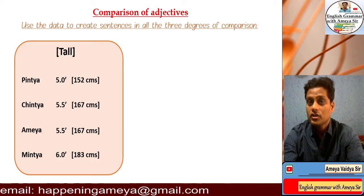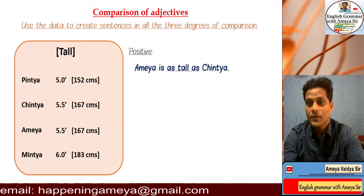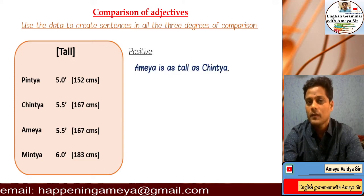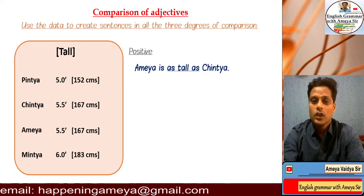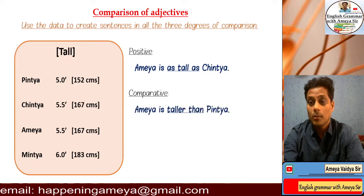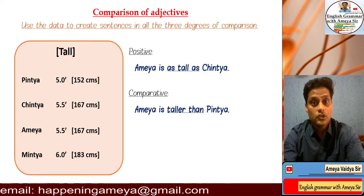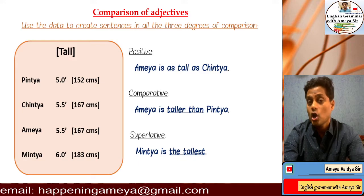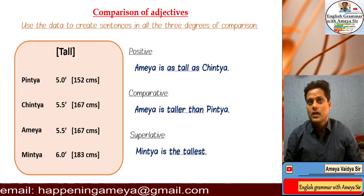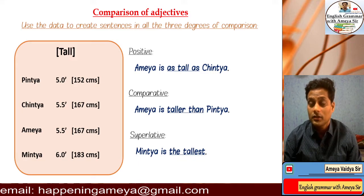Using the information given in the data, I can say Amea is as tall as Chintia because they both have 167 centimeters of height. Using the comparative degree, I can say Amea is taller than Pintia, because Pintia is just 152 centimeters tall. But the superlative is: Mintia is the tallest at 183 centimeters.